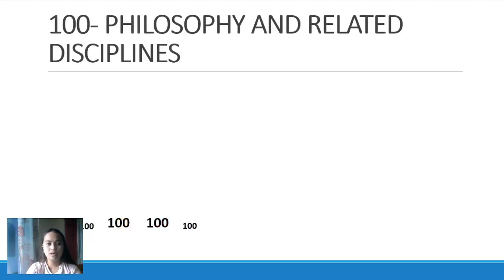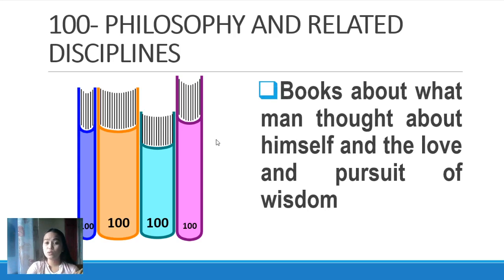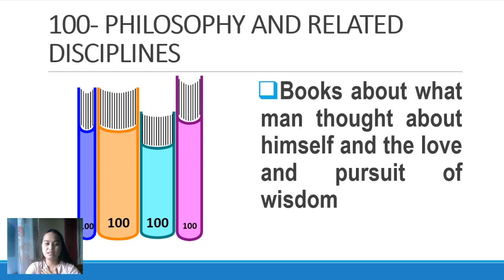Next is 100, which means Philosophy and Related Disciplines. In the spine label of the book, there is 100. These are books about what man thought about himself, and the love and pursuit of wisdom — philosophies about yourself, about life, about disciplines, and human beings.